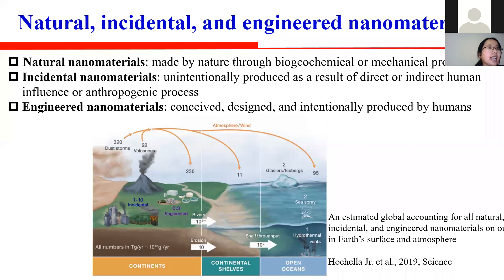Incidental nanomaterials are those unintentionally produced as a result of direct or indirect human influence or anthropogenic processes, such as industrial, agricultural, and other activities. Engineered nanomaterials are conceived, designed, and intentionally produced by humans. This figure shows that up to 0.3 kilograms of engineered nanomaterials enter the environment per year.